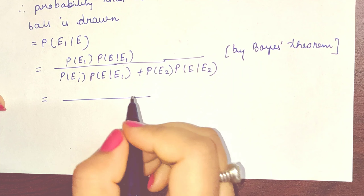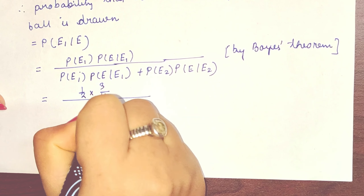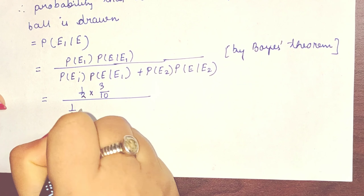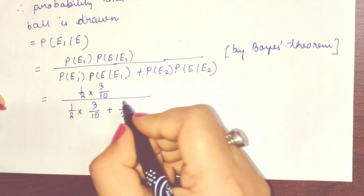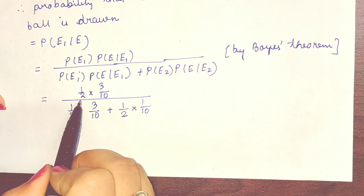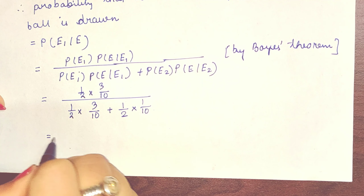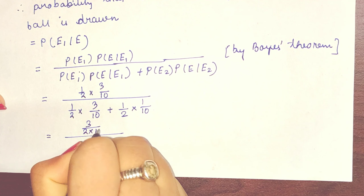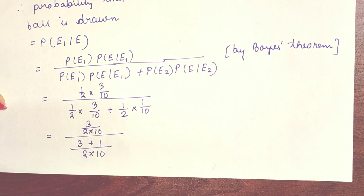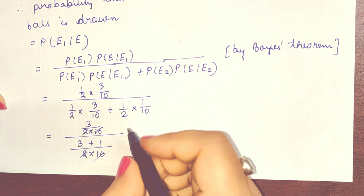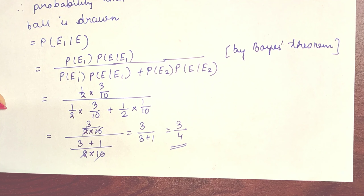Replacing all values: P(E1|E) = (1/2 × 3/10) divided by (1/2 × 3/10 + 1/2 × 1/10). Taking LCM of 2 × 10 for both numerator and denominator, the 2 and 10 cancel out, giving 3 divided by 3 plus 1, which equals 3/4.